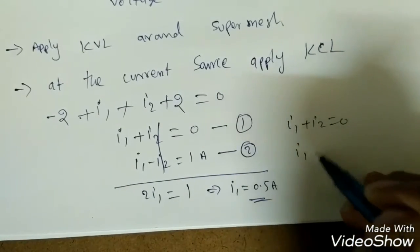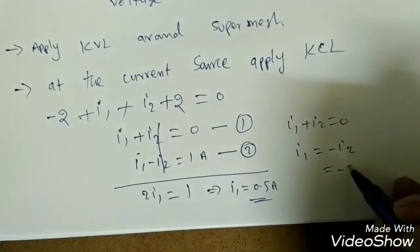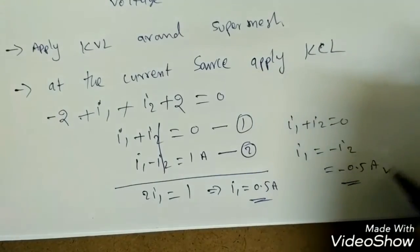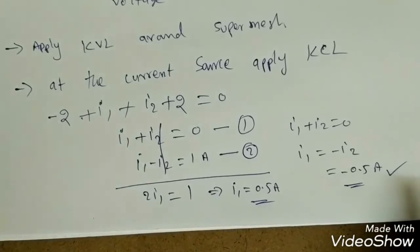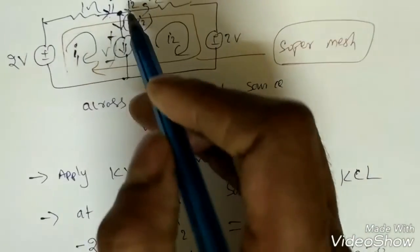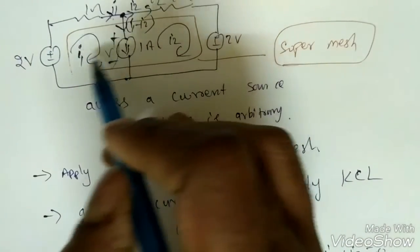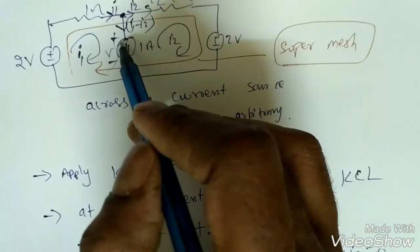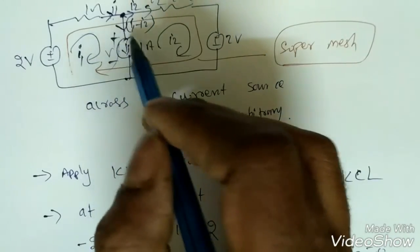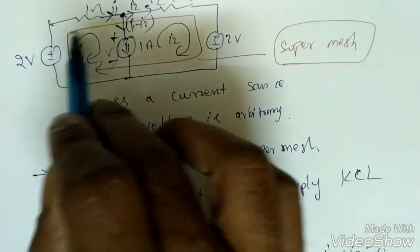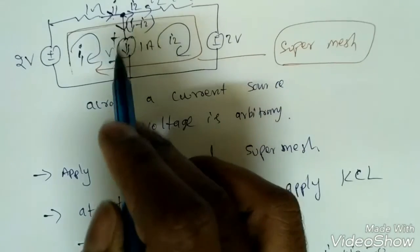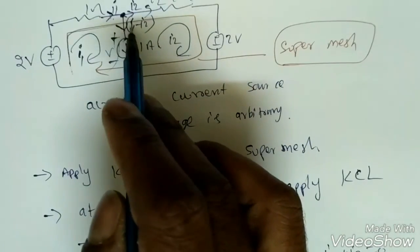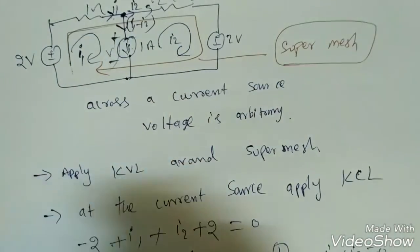Applying KCL at the current source node: I1 minus I2 = 1 ampere (the current source value). This is equation 2. Solving equations 1 and 2 together: adding them gives 2I1 = 2, so I1 = 0.5 amperes. Substituting back into equation 1 gives I2 = minus 0.5 amperes. This demonstrates the super mesh concept for handling current sources in mesh analysis.